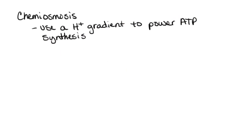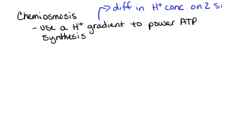Our second method of making ATP is going to be chemiosmosis. Chemiosmosis is when we use a hydrogen ion gradient to power ATP synthesis. This hydrogen ion gradient is going to be a difference in hydrogen concentrations, and these will be on two sides of a membrane.